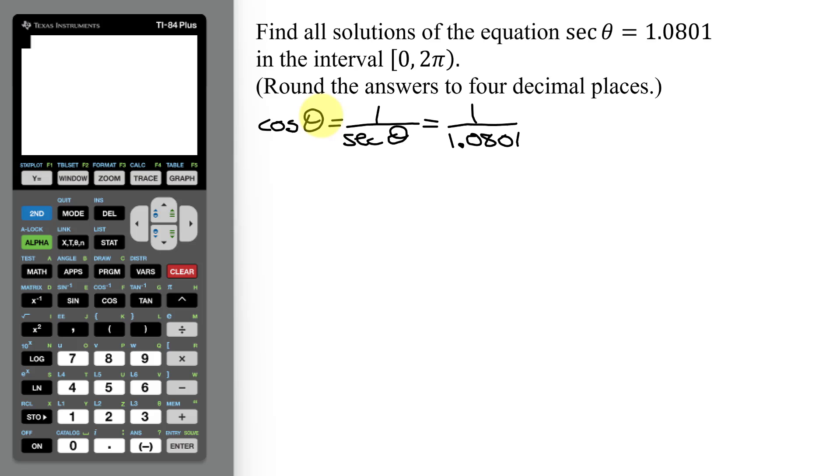Now, in order to get theta by itself, theta is just going to be the inverse cosine or the arc cosine function of this expression 1 divided by 1.0801.